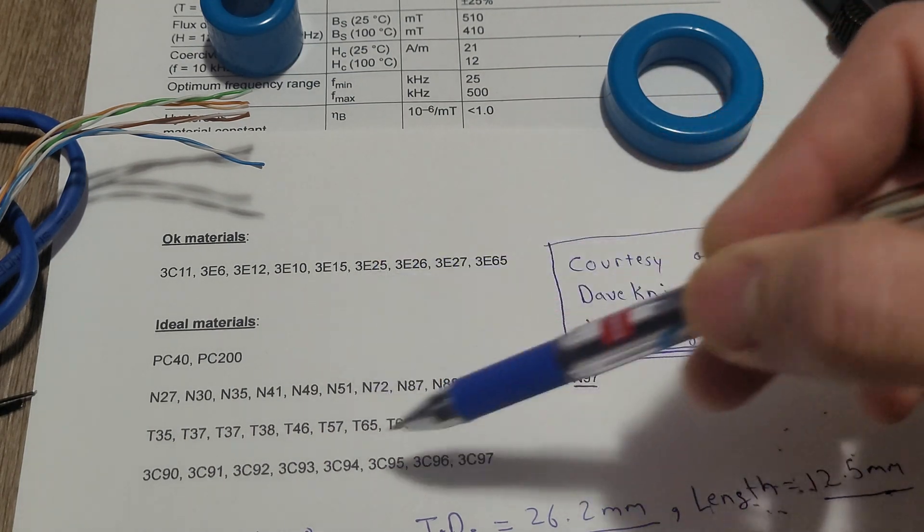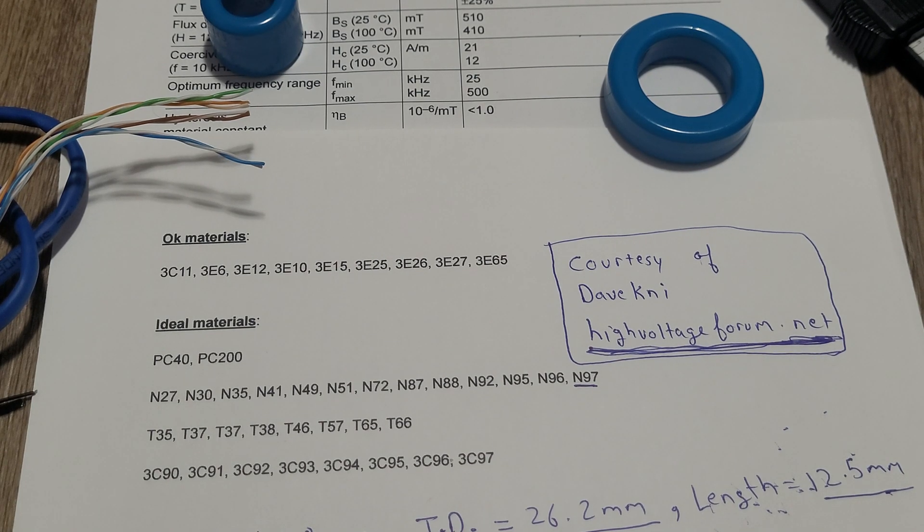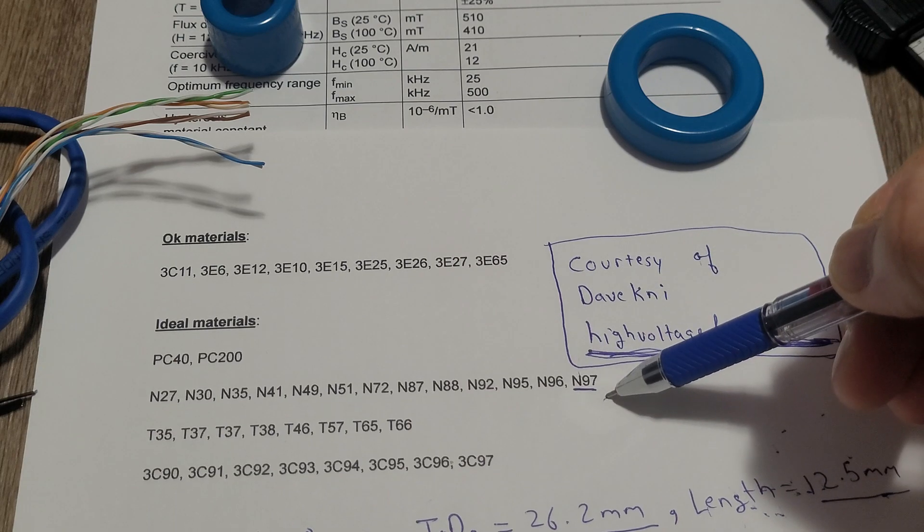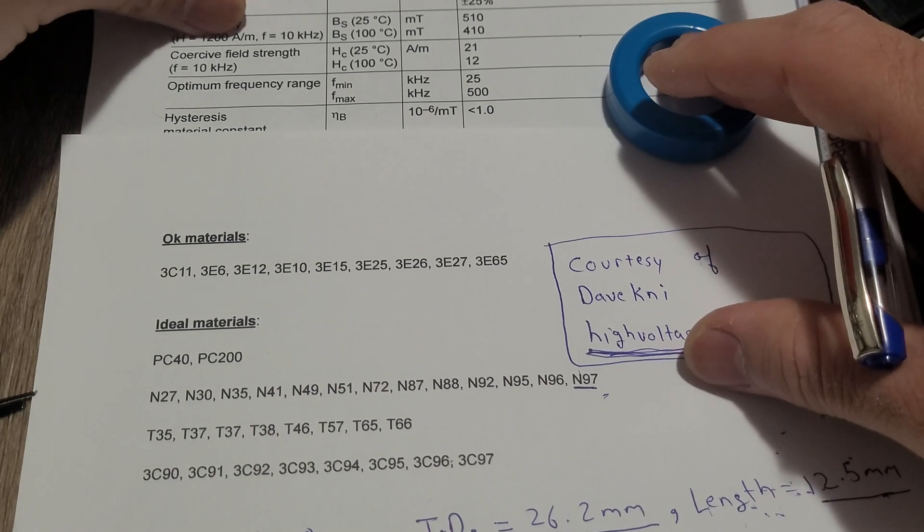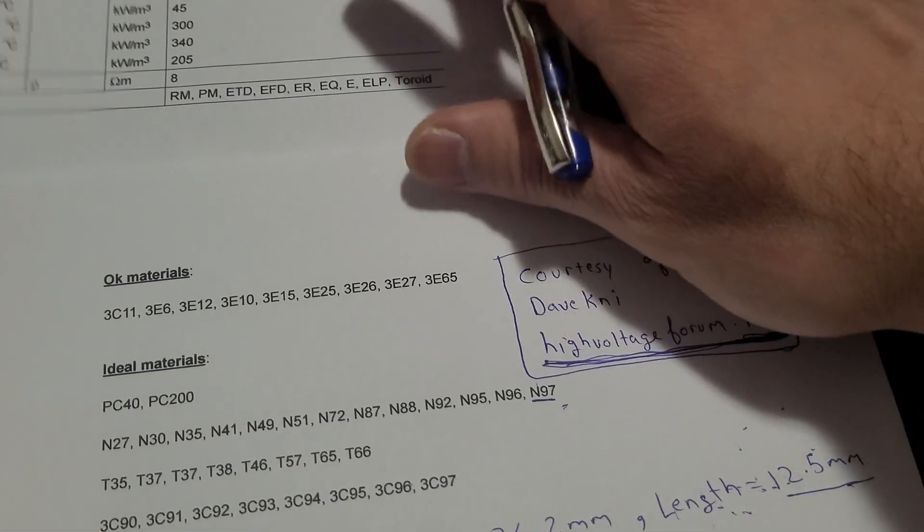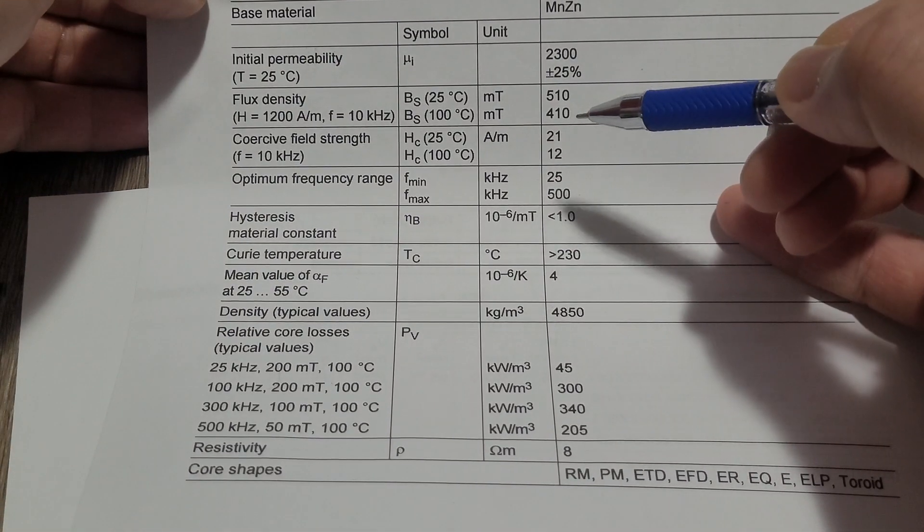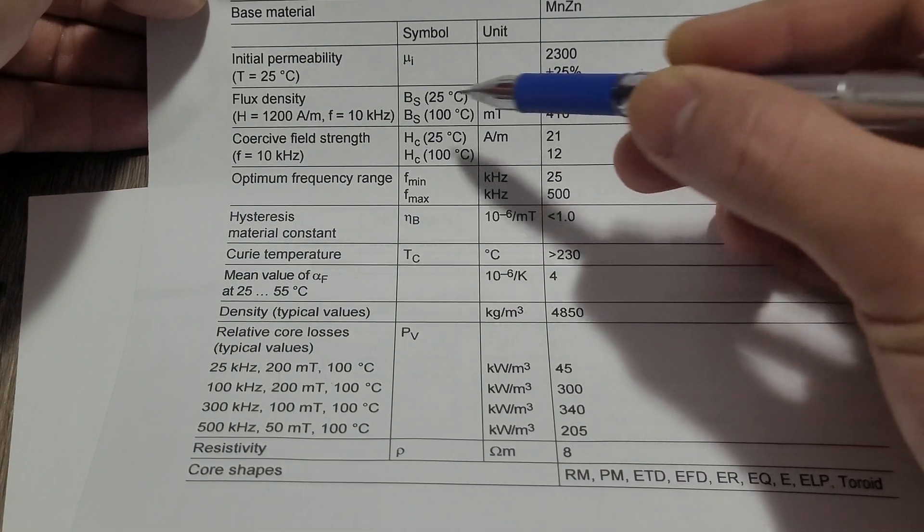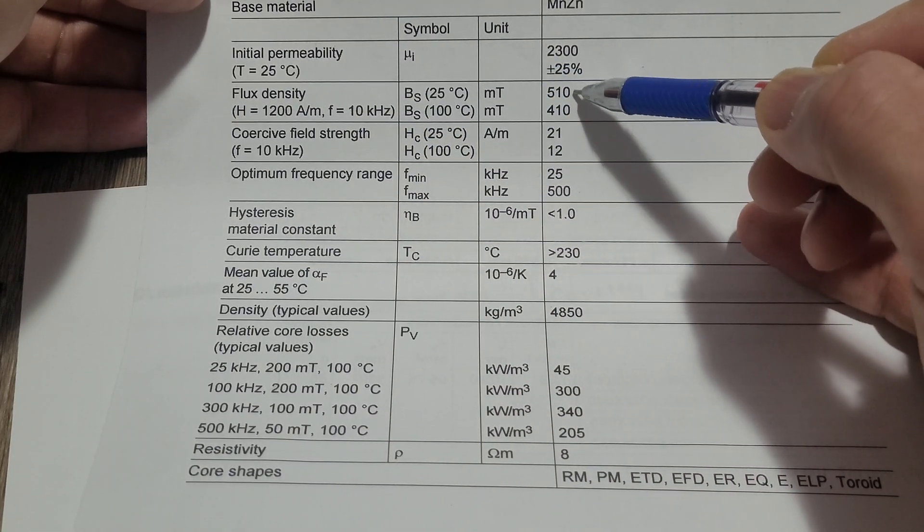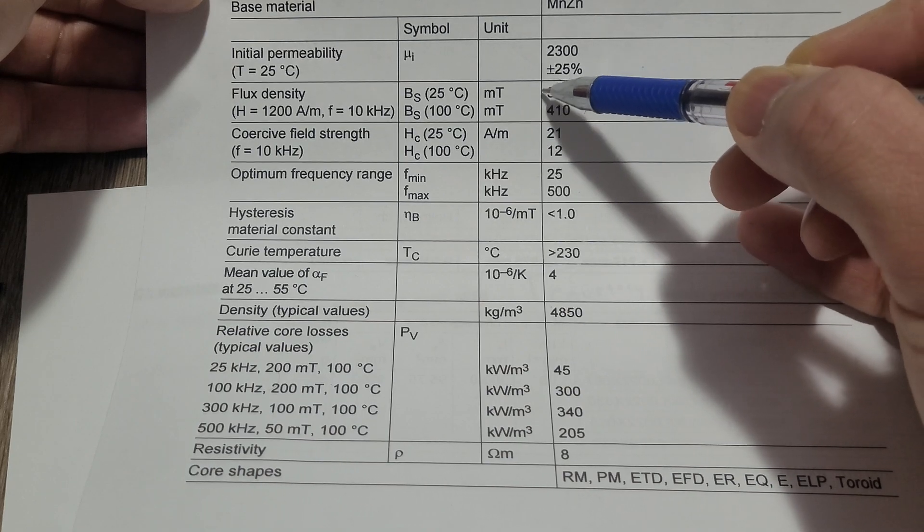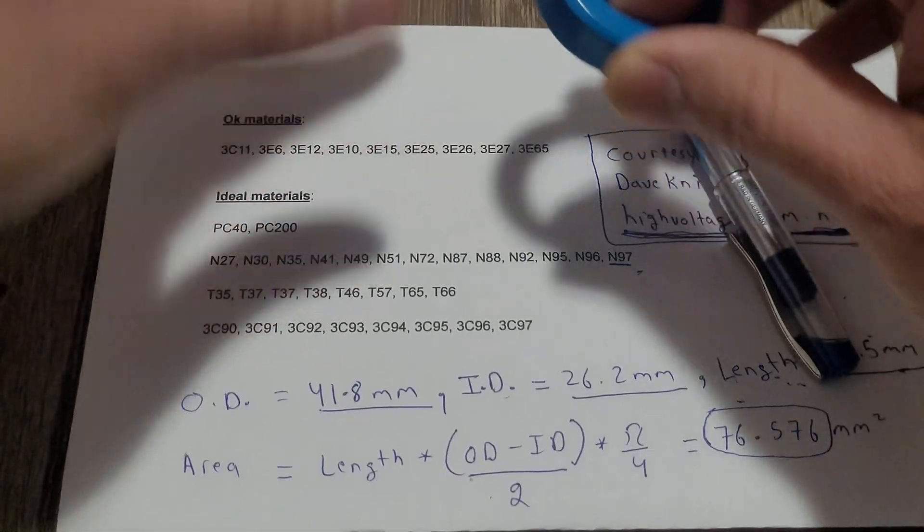Now grab the datasheet of the material that you will be using and you need to look for these values: flux density at 25 degrees Celsius and 100 degrees Celsius. This is in milliTesla. Also take measurements of your core.